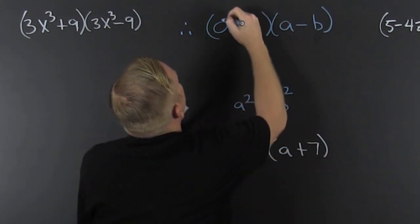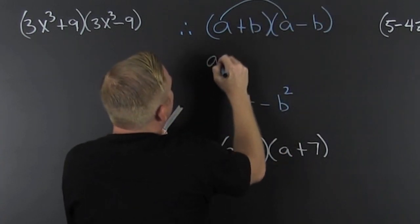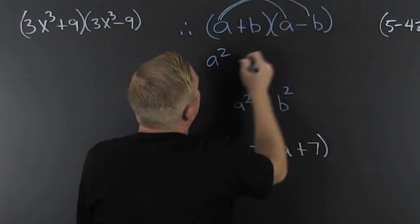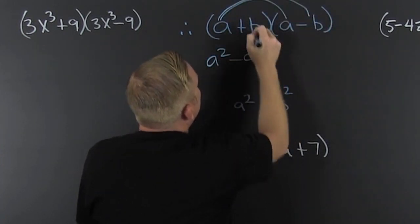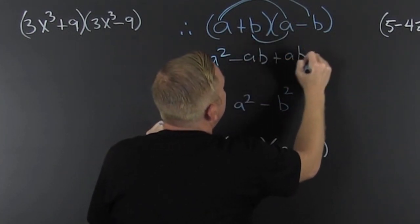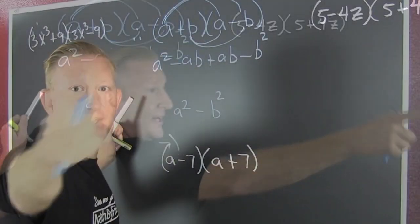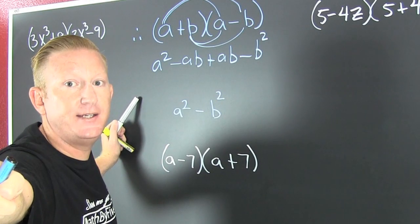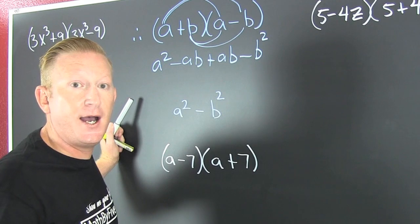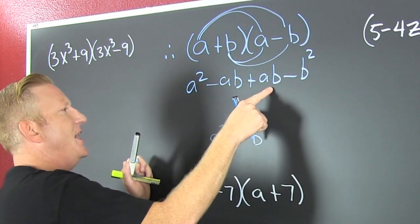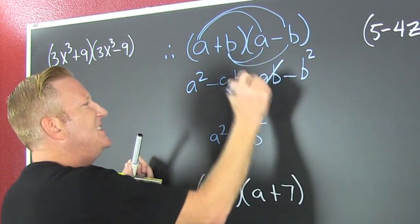So if we did it like we did last, first a squared, outer minus ab, inner plus ab, finally last minus b squared, and then we gather, collect and combine. We see we have additive inverses ab and minus ab.